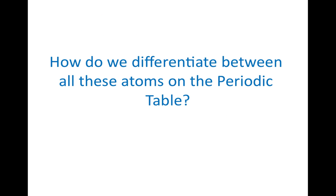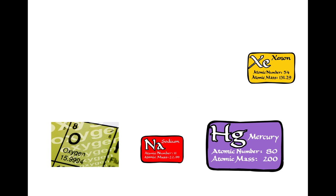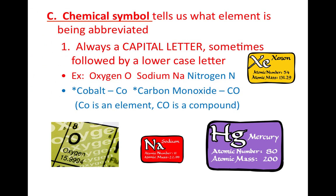How do we differentiate between these atoms on the periodic table? All of these particles come together to make unique elements, such as xenon, mercury, sodium, oxygen. How do we know which one's mercury, which one's xenon, which one's oxygen? You can see from these squares that we abbreviate them using what's called a chemical symbol, and that tells us what element is being abbreviated.